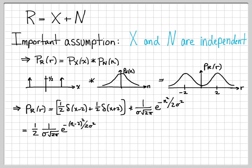Convolving with delta(x minus 2) shifts the Gaussian to the location of the impulse — mathematically, we replace n with n minus 2. Similarly, we have another term with delta(x plus 2) convolved with the Gaussian, which shifts the Gaussian to the location at minus 2, meaning we replace all n's with n plus 2. So we obtain two pieces for the probability density function.